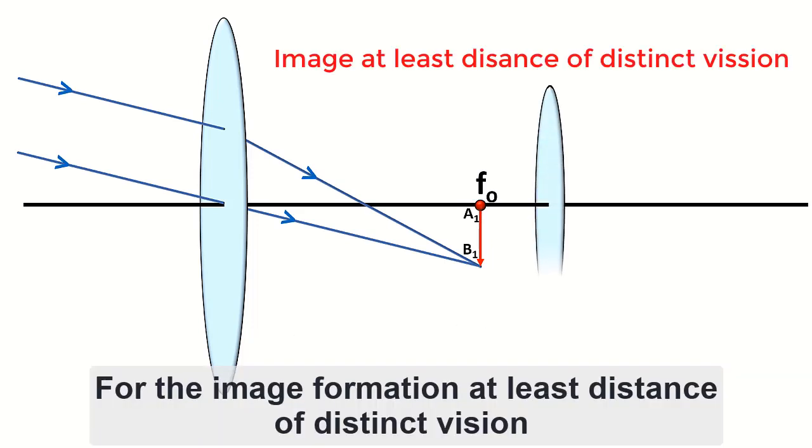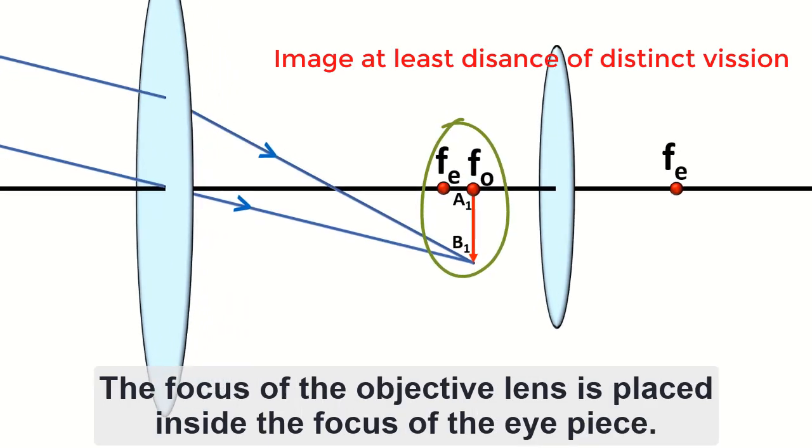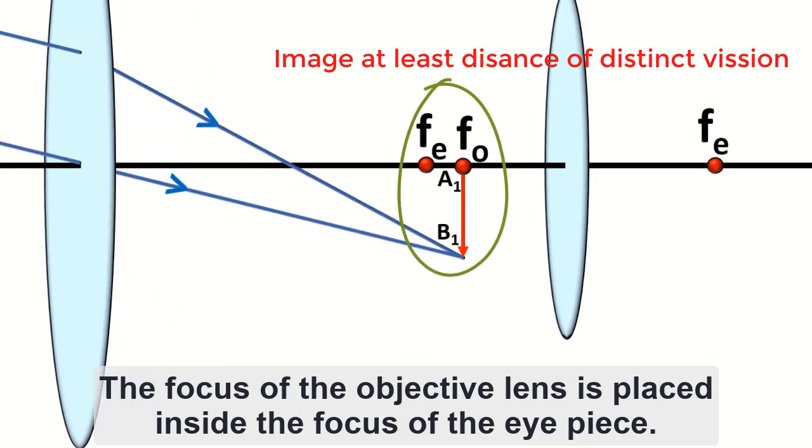For the image formation at least distance of distinct vision, the focus of the objective lens is placed inside the focus of the eyepiece.